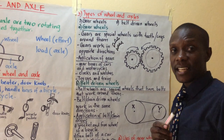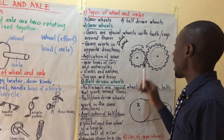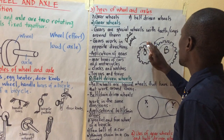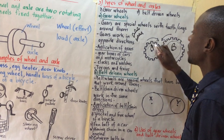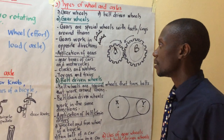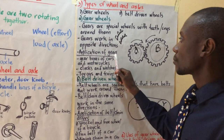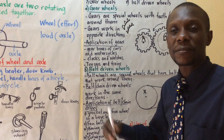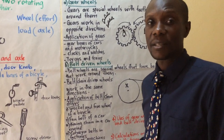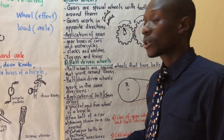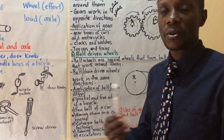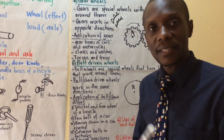In an exam, I can set a question where I label this gear A and this gear B, put an arrow on B, and tell you to complete the diagram by putting an arrow on A. You should know that gears work in opposite directions. Then for the application of gears, give examples of devices that use gears: we have gear boxes of cars and motorcycles, clocks and watches, and toys for children — toy cars, toy trains and so on — all those use gears.